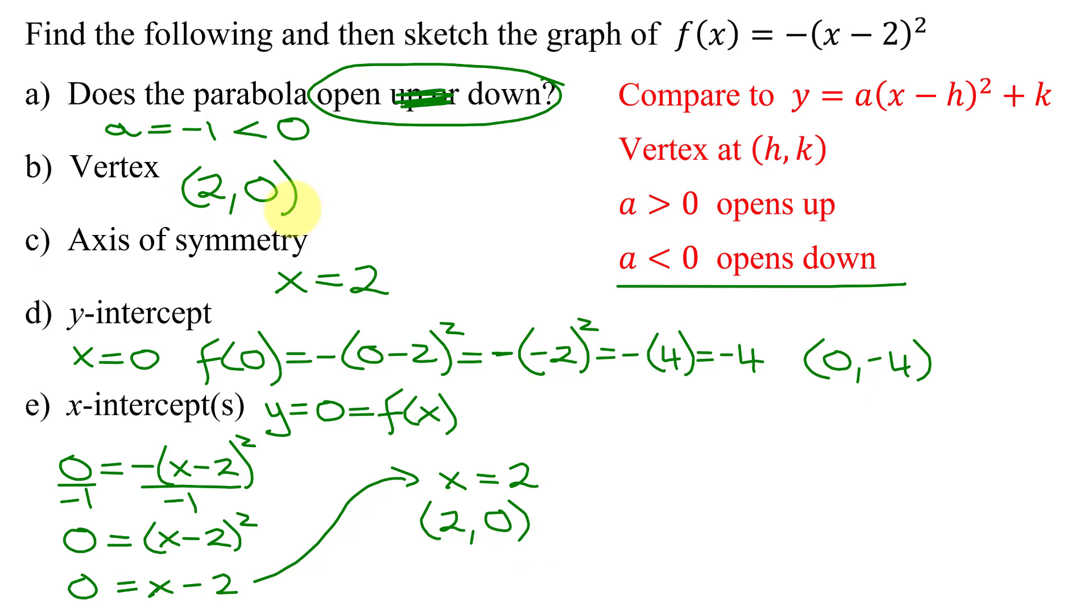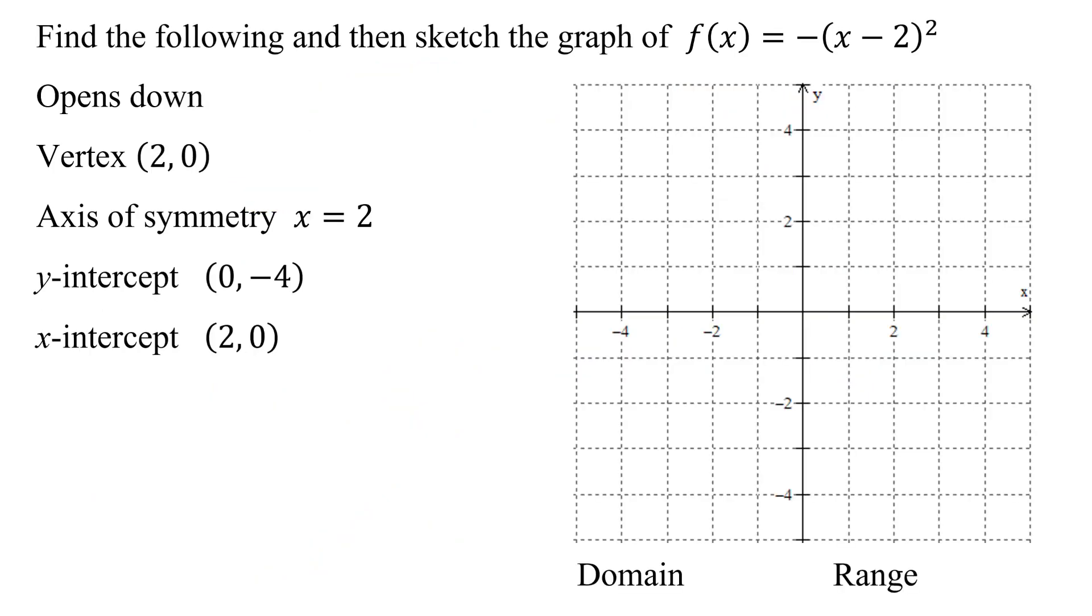Now, moving on to my next page. Now I put all the information I found on the previous page over here. So plotting our points, the vertex was at (2, 0). Start at the origin, right 2, nowhere in the y-direction. There is my vertex. The axis of symmetry, x equals 2, is a vertical line that goes through the vertex. I'm just going to graph it in with a dotted line. So that is the line x equals 2.